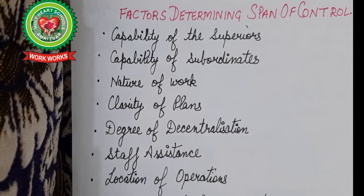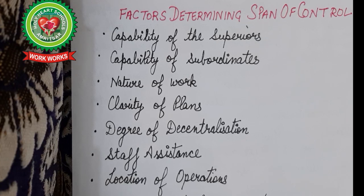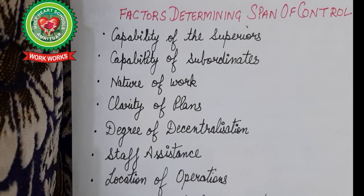Now we will discuss factors affecting span of control — what one should keep in mind when deciding how many employees a manager can handle. First, capability of the superior: when experienced with adequate knowledge and good relations with workers, a superior can supervise more workers. Second, capability of subordinates: when subordinates are competent and qualified with self-control, they require less supervision, leading to a wider span. Third, nature of work: routine, repetitive work requires less supervision and leads to a wide span, while specialized or varying daily work requires a narrow span.